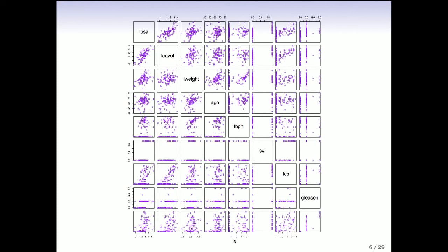So the first data set we're going to look at is on prostate cancer. This is a relatively small data set — 97 men sampled from men with prostate cancer, actually by a Stanford physician, Dr. Stamey, in the late 80s. And what we have is the PSA measurement for each subject along with a number of clinical and blood measurements from the patients — some measurements on the cancer itself and some measurements from the blood, to do with cancer size and the severity of the cancer. This is a scatterplot matrix which shows the data. On the diagonal is the name of each of the variables and each little plot is a pair of variables. You can see all the data at once in one picture, including what variables are correlated.